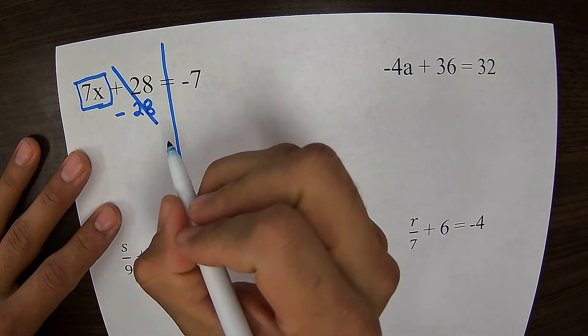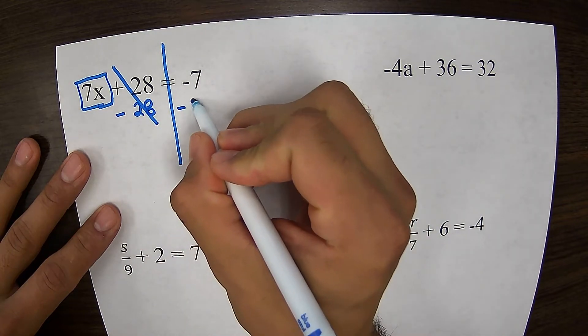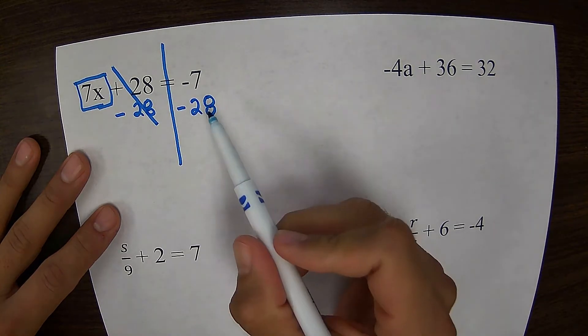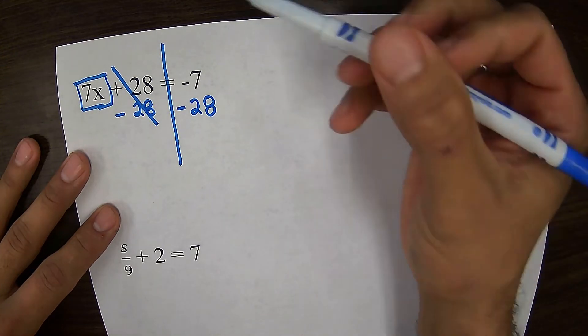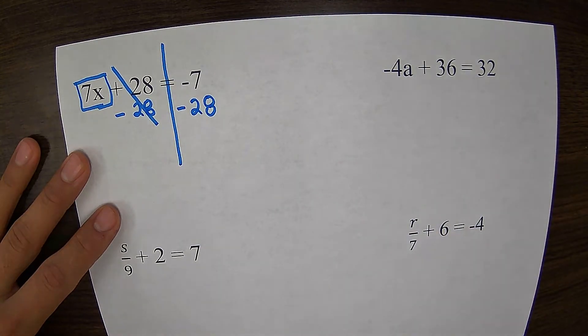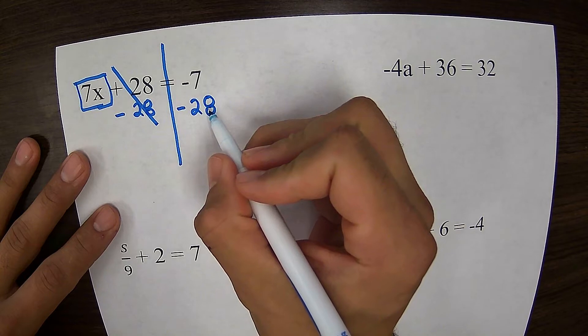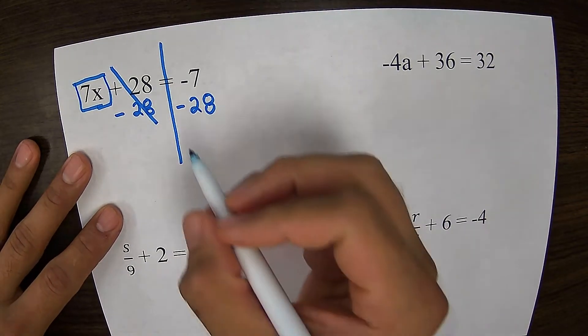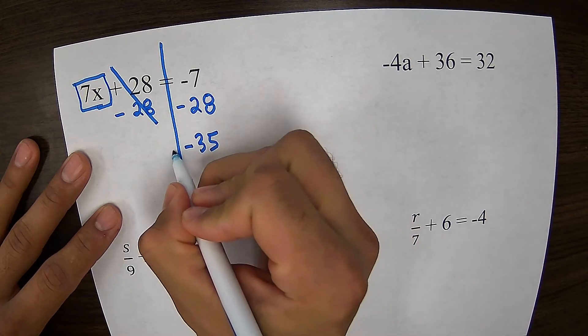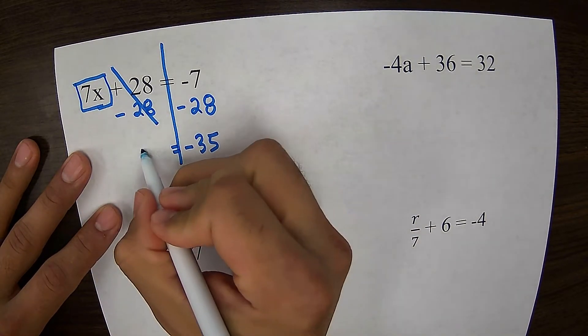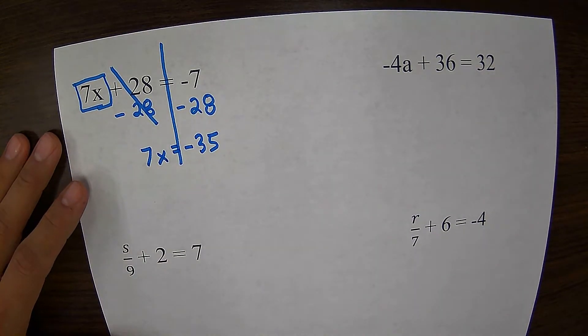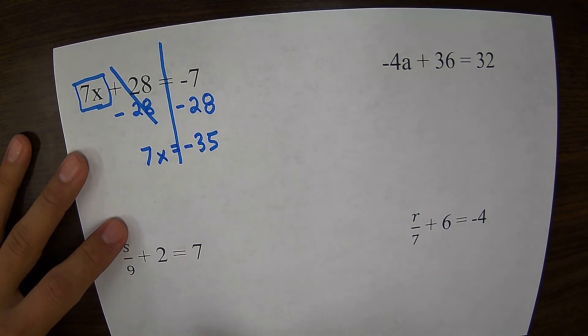For every equation, whatever I do to one side, I always have to do to the other side. So if I'm subtracting 28 on the right-hand side, this is saying negative 7 subtract 28, and that is going to be negative 35. I can bring down my equal sign, bring down my 7x's. So now I'm down to a one-step equation, 7x equals negative 35.